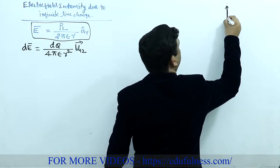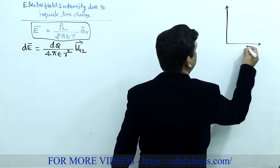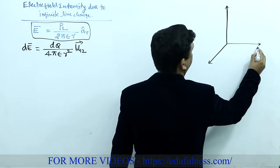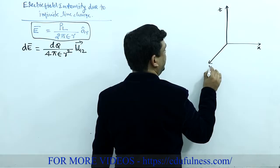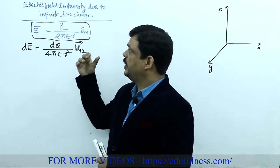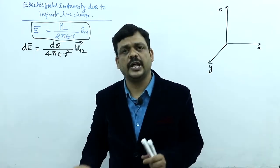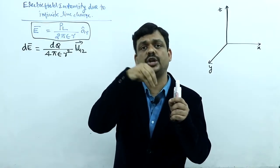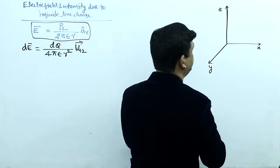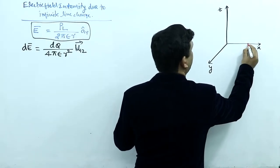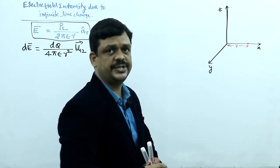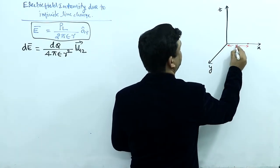I am assuming a rectangular coordinate system with x-axis, y-axis, and z-axis. Electric field intensity is the force acting on a unit positive charge. For that purpose, I am placing that unit positive charge on the x-axis at a certain distance r from the origin.